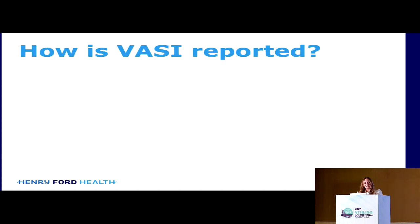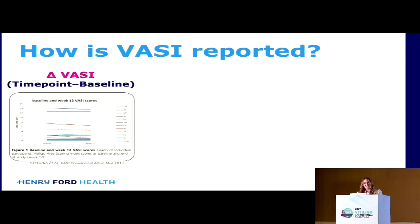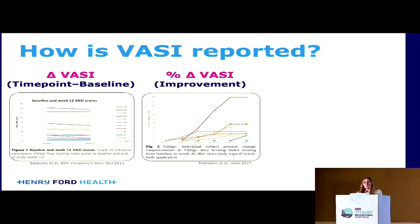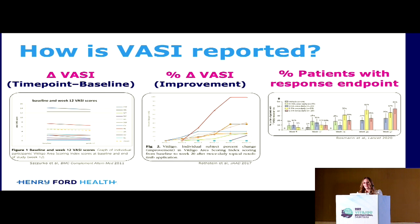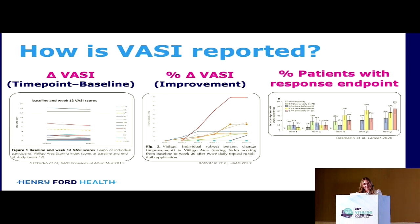There were also differences in how the VASI was reported in the results section. Some used the delta VASI, which is the difference between the time point and the baseline. Some used the percent change of the delta — how much it improved. And some studies used the percent of patients who achieved the response endpoint. This last approach is from the FDA study on ruxolitinib, so this is likely how the FDA would prefer studies to be reported in the future.